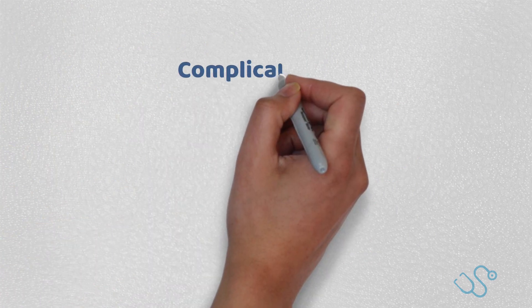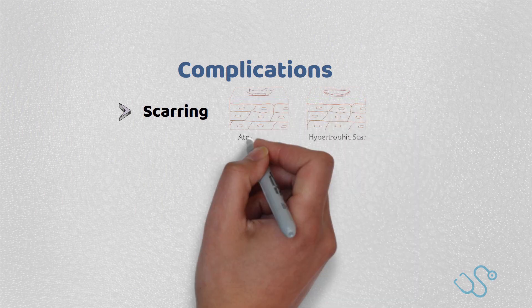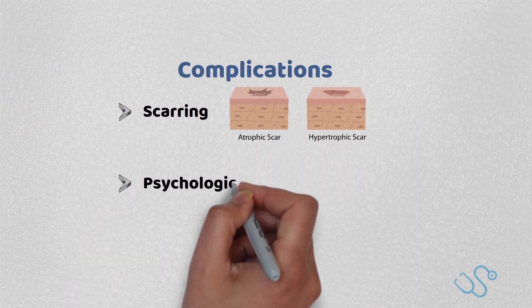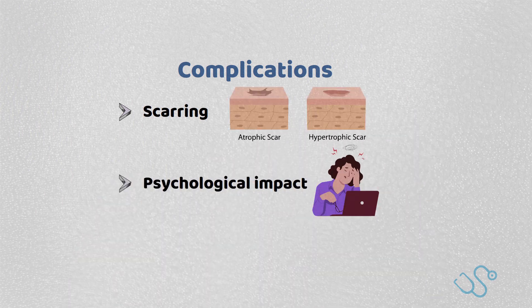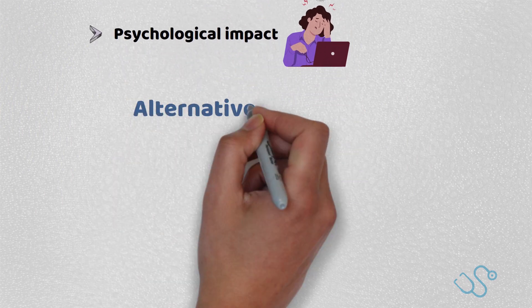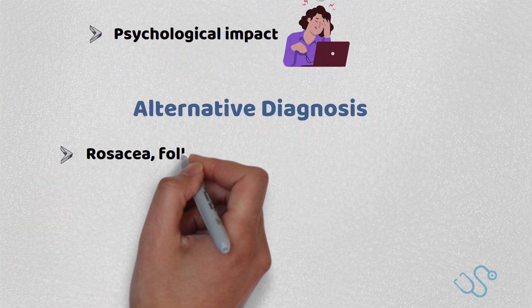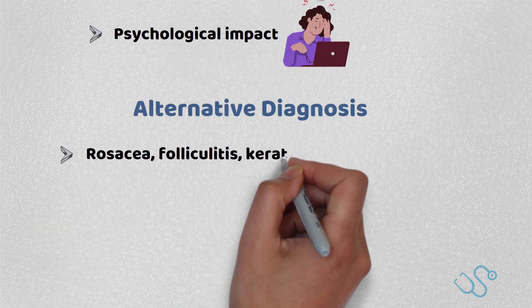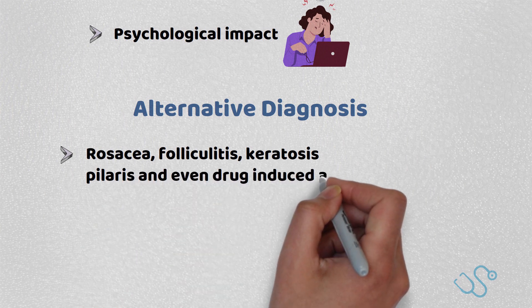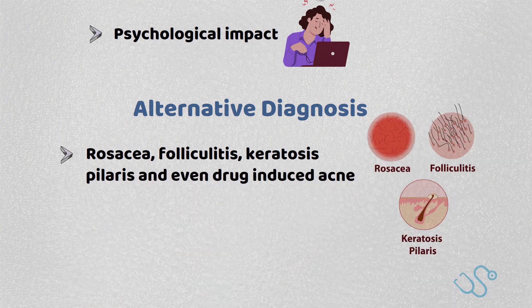Remember, some of the complications of acne could be severe scarring and even significant psychological impact. But bear in mind, the absence of comedones should give rise to an alternative diagnosis, such as acne rosacea, folliculitis, keratosis pilaris, and even drug-induced acne.